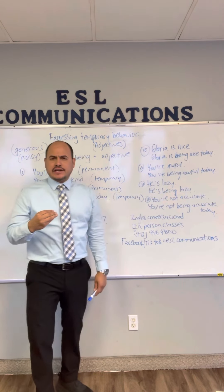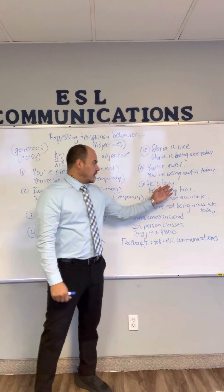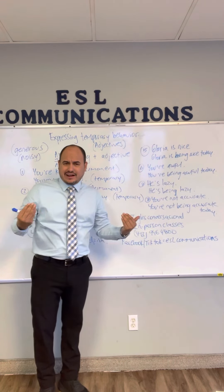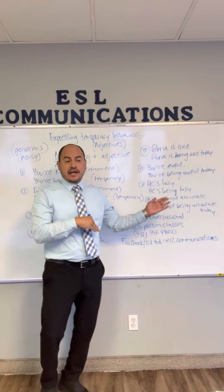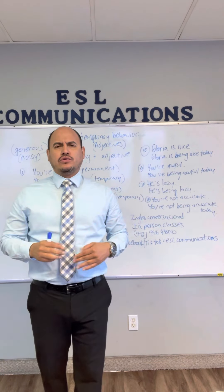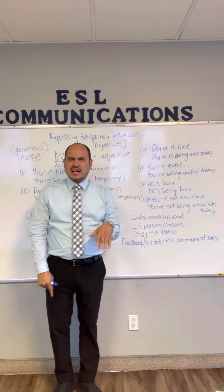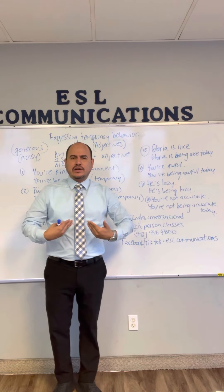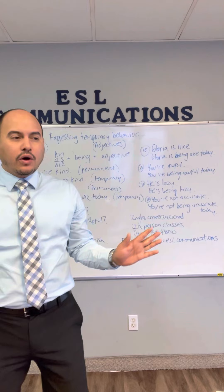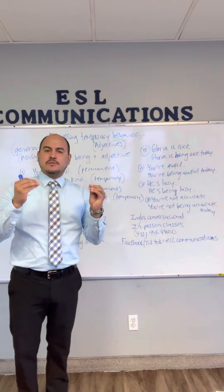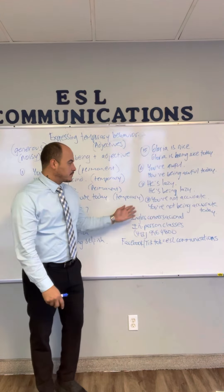Number seven: 'lazy' — perezoso, flojo, aragán, depending on your country. Permanent: 'He's lazy.' Temporary: 'He's being lazy.' You have to learn the language not just to translate but to interpret. Imagine a situation where someone is doing nothing today — instead of saying 'he's not doing anything,' you say: 'He's being lazy today.'